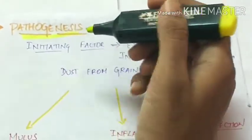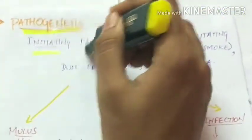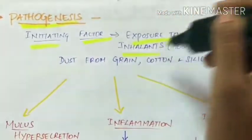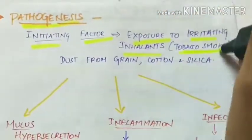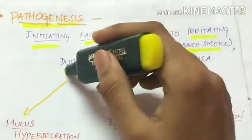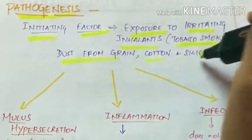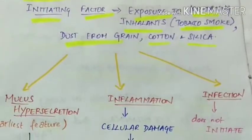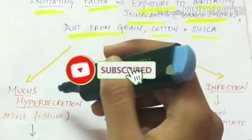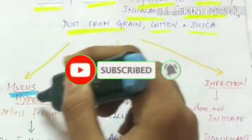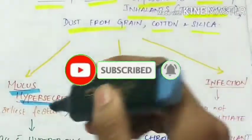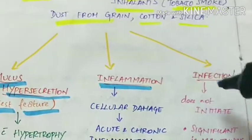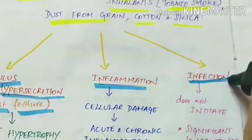Pathogenesis of chronic bronchitis. The initiating factor is exposure to irritating inhalants like tobacco smoke or dust from grains, cotton and silica. This leads to three pathogenic mechanisms: first is mucus hypersecretion, which is the earliest feature; second is inflammation; and third is infection.